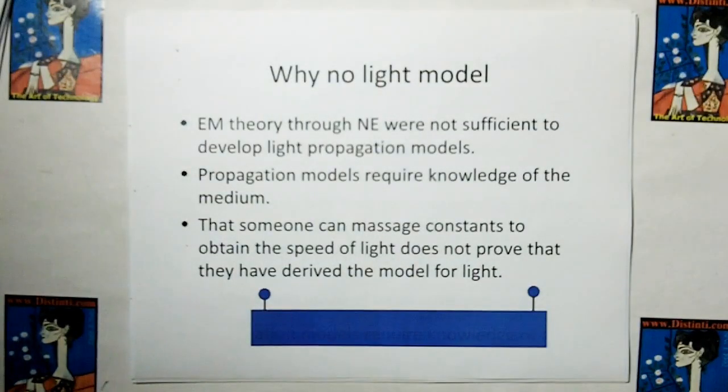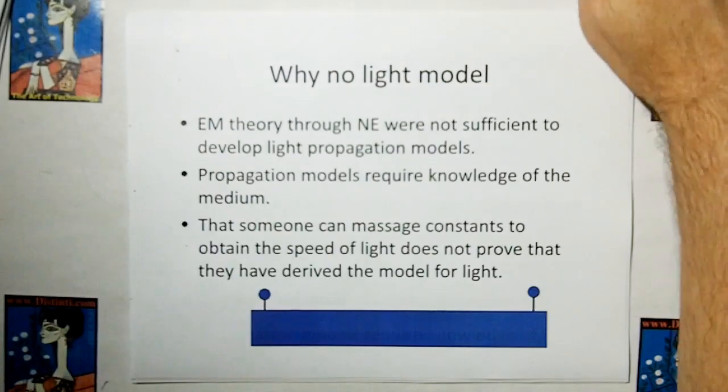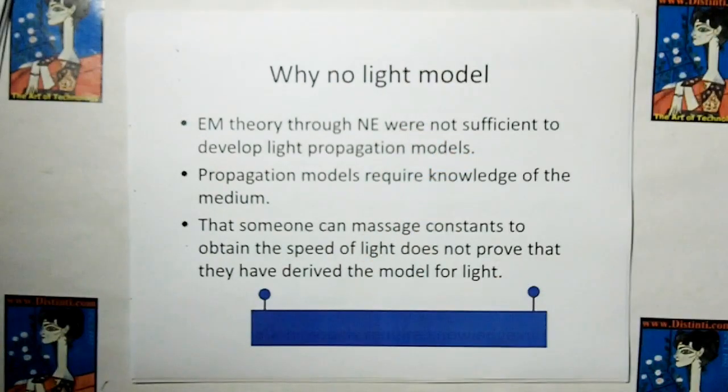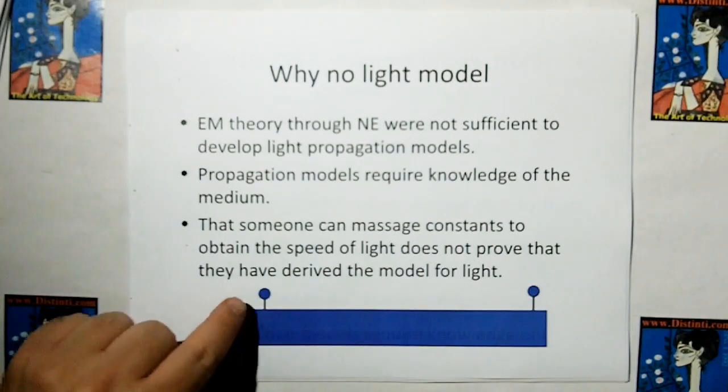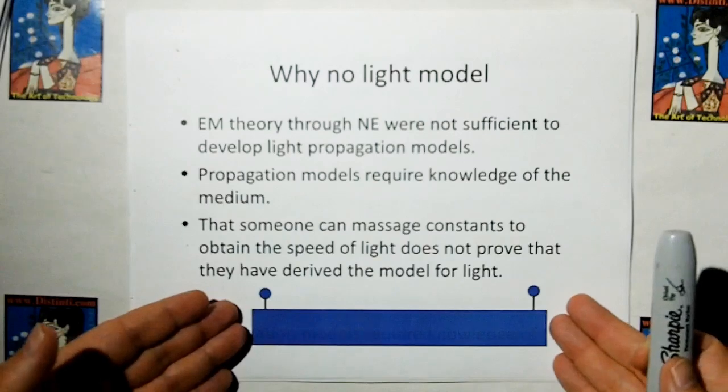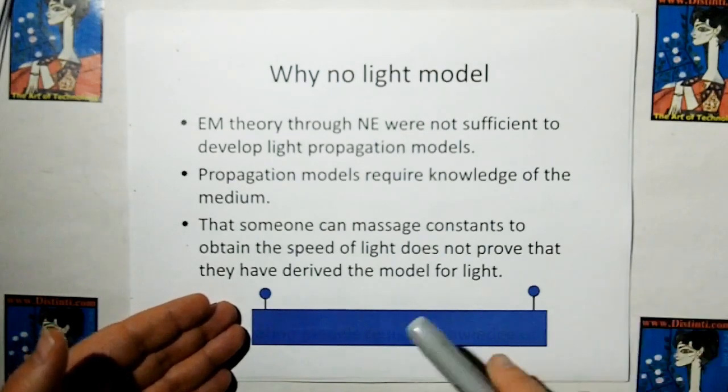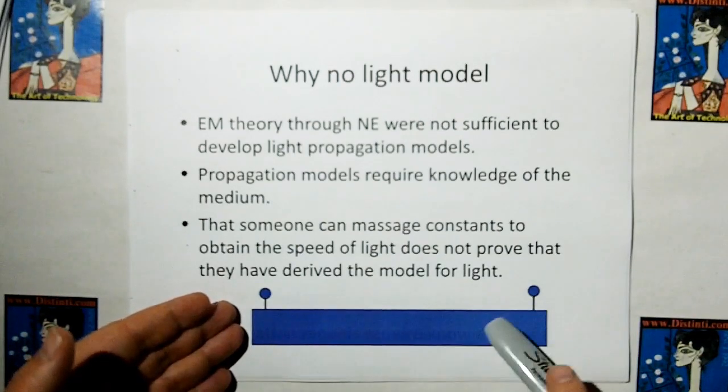And why have we not had a light model? Some people ask me, why new electromagnetism has never had a model for light? And the reason why is because all of these force models, including the classical ones, are force at distance. In other words, we have an electron. Suppose we have a little box here. And this box had some kind of fluid in it.